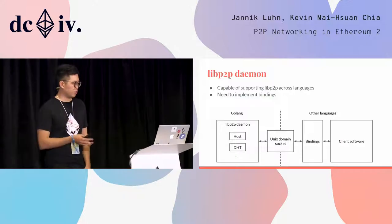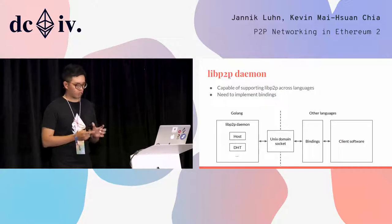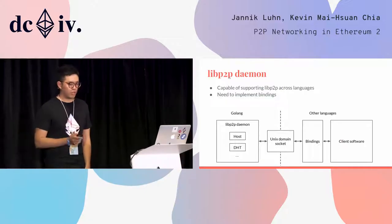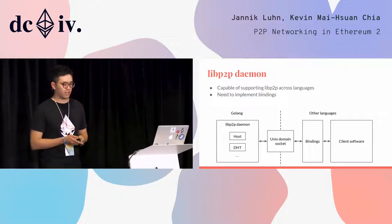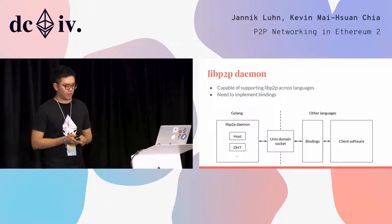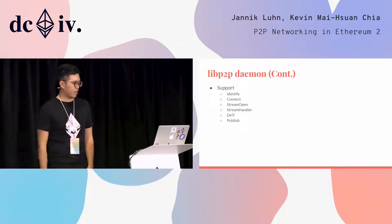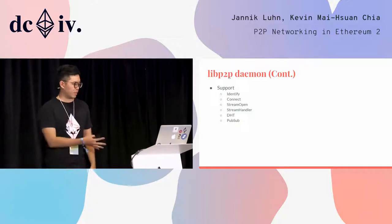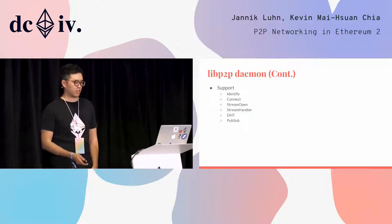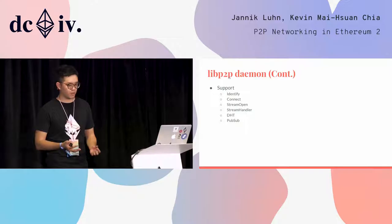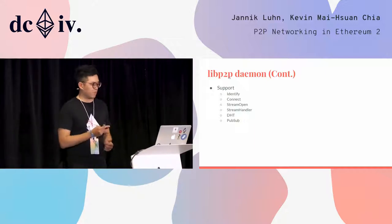We're going to change to use the libp2p daemon. The libp2p daemon is capable of supporting libp2p across languages, and if you want to use it you need to implement the bindings. As shown in the graph, the libp2p daemon is a standalone process that handles the libp2p components, and you can control the daemon through a Unix domain socket. Currently it supports multiple methods: identify to get a peer ID, connect to other peers, open streams to other peers, and register a function to handle incoming streams. The DHT operations and gossipsub are still underway.